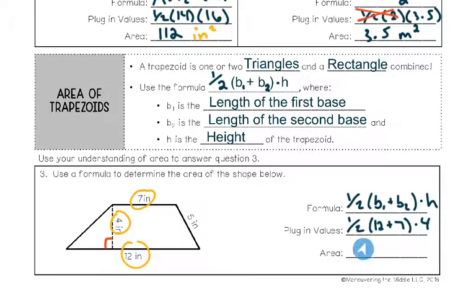Now that those are all plugged into my formula, I just need to solve it out. Using order of operations, I need to start in parentheses. So I do 12 plus 7 first, which is 19. So half of 19 times 4 gives me my area. If you don't have a calculator, doing half of 19 might be difficult. But if you do half of 4, you can do that first and get 2. So half of 4 is 2 times 19 is 38.